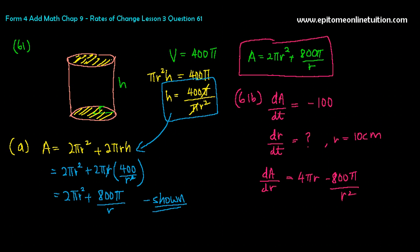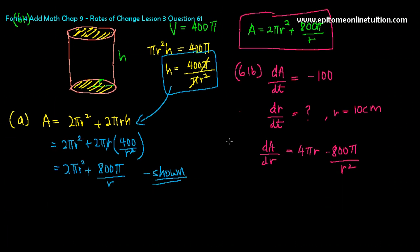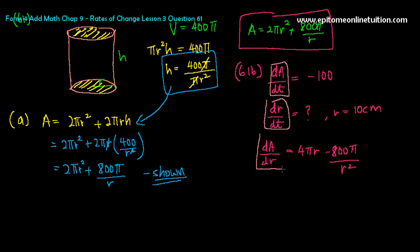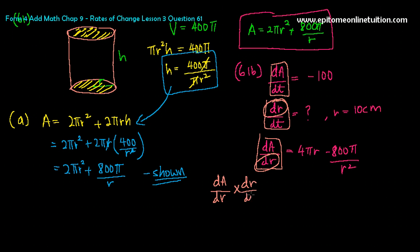Now you're done with the three things. Form your chain rule. This, and this, and this. Look for something at the bottom and at the top. Can you see this? dr and dr. So that's how you're going to do your chain rule: dA/dr, this one, multiply with dr/dt, this one. And if you cut off the dr, dr, you will get dA/dt, which is the one on top.